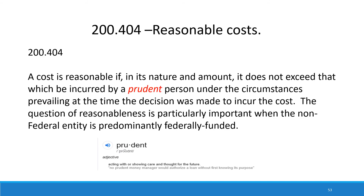Now we're going to move on to discuss allowable and also some disallowable costs. We would like to provide some clarification on areas where agencies often misunderstand the definition of what is allowable and disallowable. One thing you'll hear us repeat over and over again is whether a cost is reasonable, allowable, and necessary. The federal definition of reasonable cost can be found in 2 CFR 200.404, which states a cost is reasonable if in its nature and amount, it does not exceed that which can be incurred by a prudent person under the circumstances prevailing at the time the decision was made to incur the cost. The definition of prudent means acting with or showing care and thought for the future — for example, no prudent money manager would authorize a loan without first knowing its purpose.